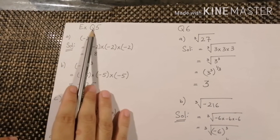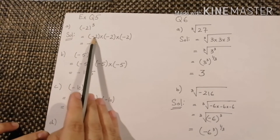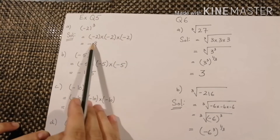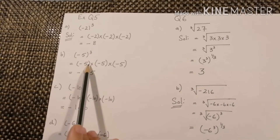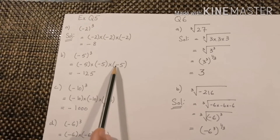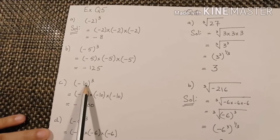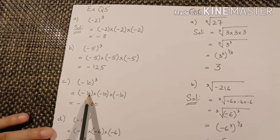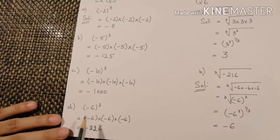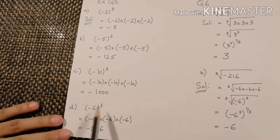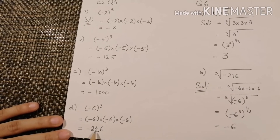Exercise 2C, question number 5. Part A: minus 2 power 3 means minus 2 is multiplied 3 times and we get minus 8. Part B: minus 5 power 3 means minus 5 multiplied by minus 5 multiplied by minus 5, we get minus 125. Part C: minus 10 power 3 means minus 10 multiplied by minus 10 multiplied by minus 10, giving minus 1000. Part D: minus 6 power 3 means minus 6 multiplied by minus 6 multiplied by minus 6, the answer is minus 216.